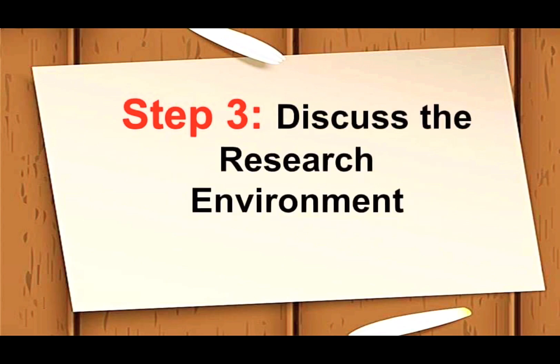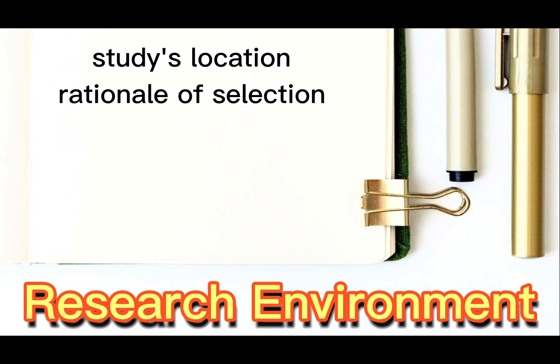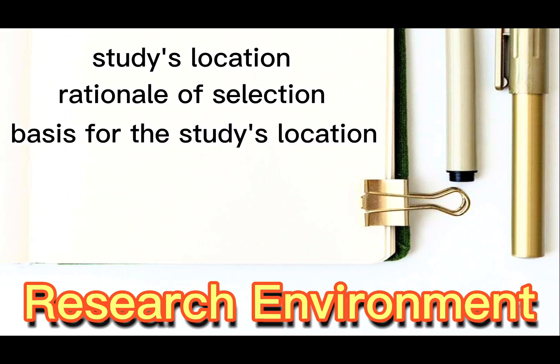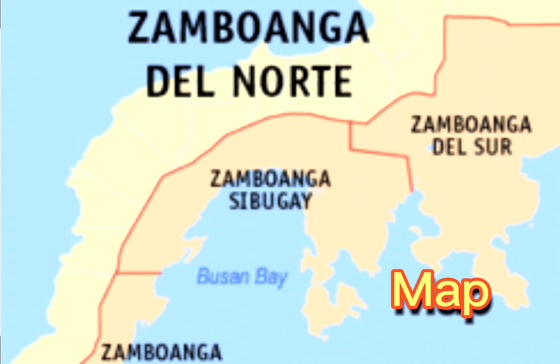Step 3: Discuss the research environment. This section briefly covers the study's location as well as the rationale behind its selection. Detailed information about the basis for the study's location selection, including relevant issues, concerns, and problems, are provided. Other institutions may require a map that shows the exact location in relation to the community and nearby towns.